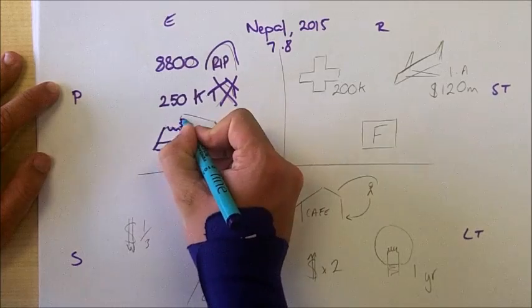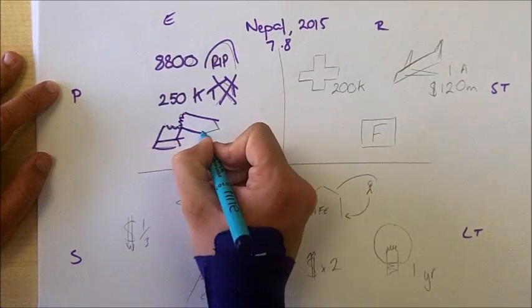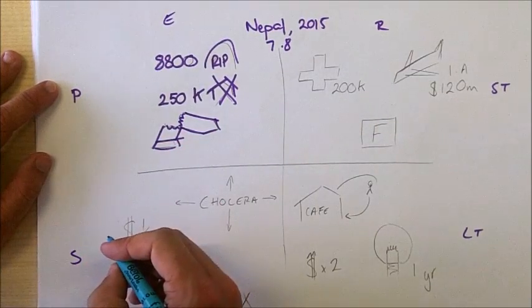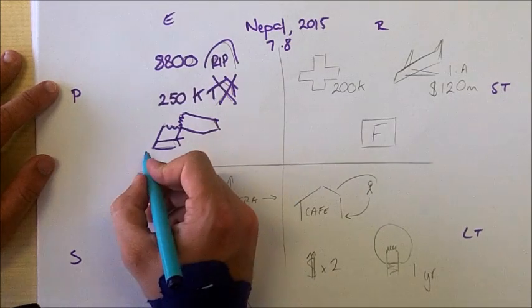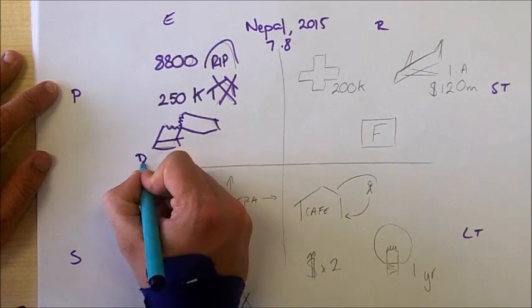In Nepal we've got a famous landmark destroyed. This time rather than a rugby stadium, we've got a famous landmark, a religious symbol called the Dharahara Tower.